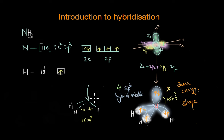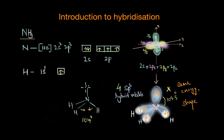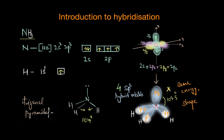Molecules always want to adopt the configuration where they have the most stability and the least repulsion between electron pairs — whether lone pairs or bonding pairs. The electronic arrangement in ammonia is tetrahedral, because we take into consideration all electron pairs including bonding pairs and the lone pair. However, the molecular geometry is trigonal pyramidal, because here we only look at how the atoms are arranged in space and do not take into consideration the lone pair.